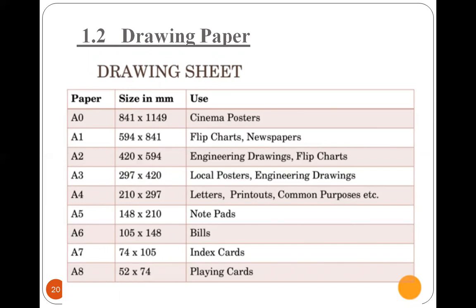The uses of drawing sheets based on their size: A0 is used for cinema posters, A1 for flip charts and newspapers, A2 for engineering drawing and flip charts, A3 for local posters and engineering drawing, A4 for letters, printouts, and common purposes, A5 for notepads, A6 for bills, A7 for index cards, and A8 for playing cards — which have a size of 52 by 74 mm.